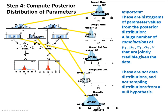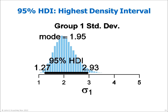These are not data distributions, and these are not sampling distributions from a null hypothesis. Let's take a closer look at the posterior distribution for credible values of sigma1. You can see that the distribution is somewhat skewed, with the modal value being 1.95. The dark horizontal bar marks what is called the 95% highest density interval, or HDI. Points within the HDI have higher credibility — that is, higher probability density — than points outside the HDI. The total probability of points within the HDI is 95%, making it a useful summary of where the most credible values fall. We can also use the HDI to convert the continuous posterior distribution to a discrete decision: points outside the HDI may be deemed not credible.